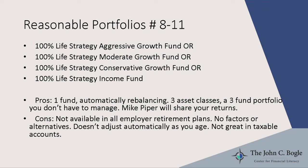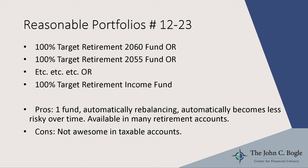The LifeStrategy funds at Vanguard are very popular and quite cool. They're basically the three-fund portfolio except you only have to buy one fund — it automatically rebalances for you. If you invest in the Moderate Growth fund, you'll have the same return as Mike Piper, which is what he invests in — his entire portfolio. Downsides: not available in all employer plans, no factors, no alternatives, doesn't adjust automatically as you age, and probably not great if you have a significant portion of assets in a taxable account.